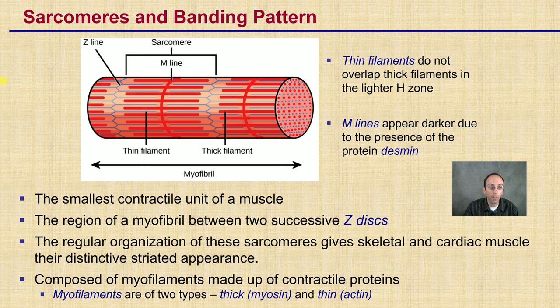The regular organization of these sarcomeres gives skeletal and cardiac muscles their distinctive striated appearance. Remember, smooth muscle does not have these striations. These are composed of myofibrils made up of the contractile proteins — the two types being thick myosin and thin actin filaments.